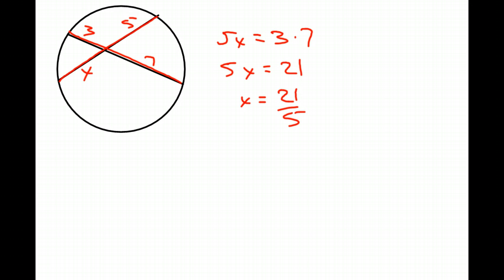So let's put one up here that we don't have all the information. 3, 5, 7, and x. Now it doesn't just work for these two chords. It works for any two chords that you have. If you've got three of the measurements, you're able to figure out the fourth one. So we're going to take the length of that and multiply it, 5x, and that's going to be the length of this multiplied, 3 times 7. So 5x equals 21, therefore x equals 21 over 5. Not much to that.